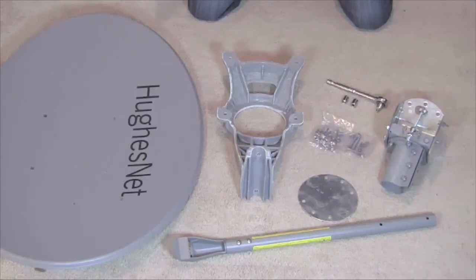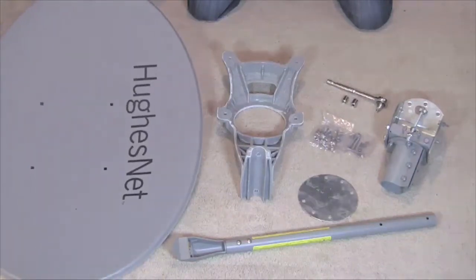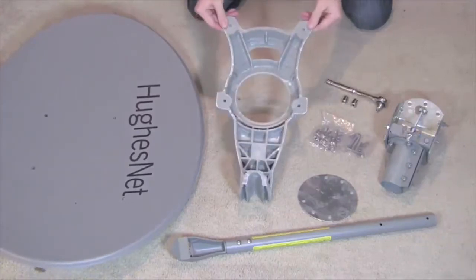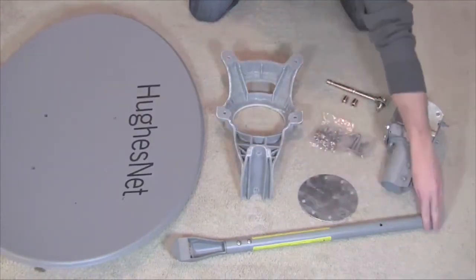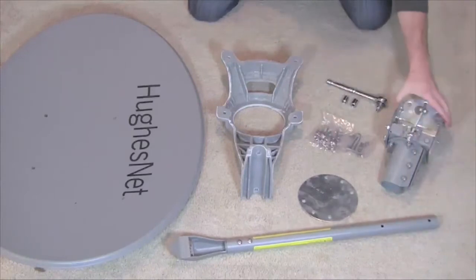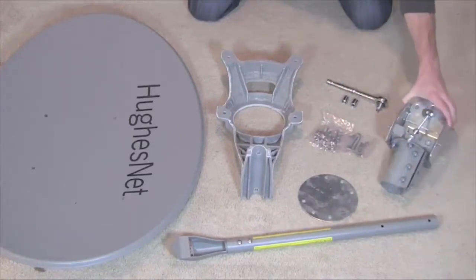The parts included are the 74 centimeter reflector, reflector bracket, tilt plate, feed arm, Azel assembly, and the hardware package containing nuts and bolts.